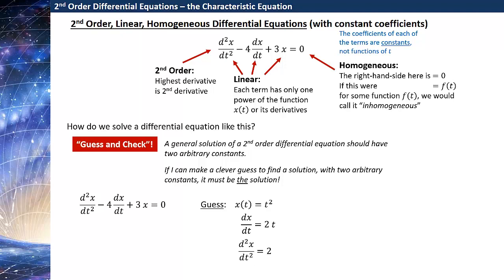So the first derivative is 2t, the second derivative is just 2. Let's plug these into the differential equation itself. The first term gives us a 2, then we get minus 4 times 2t, so that's minus 8t, plus 3 times t squared. If this were a solution to this differential equation, this should be equal to 0. And this is not equal to 0 for all time t. So this is not a solution to this differential equation.